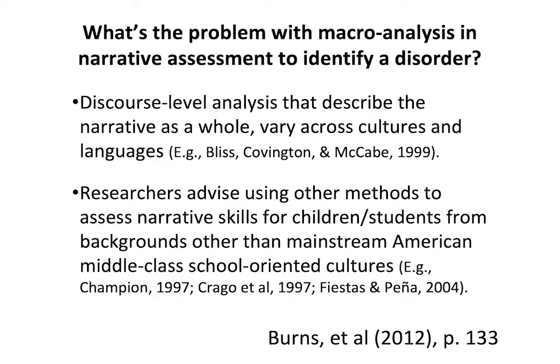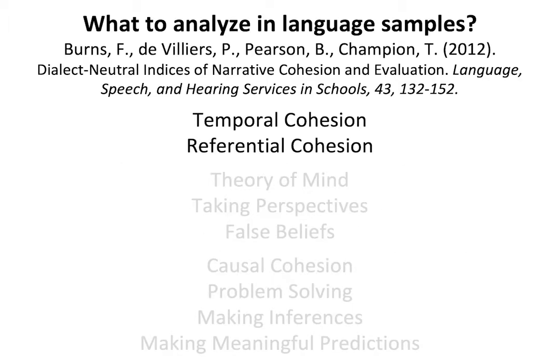What is the problem with a macro analysis in narrative assessment to identify a disorder? Burns et al. in 2012 told us that we really don't have a way of assessing narrative as a whole across cultures and languages. Researchers advise using other methods to assess kids from backgrounds other than mainstream American English, because narrative structures can be quite different across cultures. Burns, de Villiers, Pearson, and Champion wrote a very interesting article on dialect-neutral indices of narrative cohesion and evaluation — they elicited narratives but looked at micro structures rather than the macro structure.